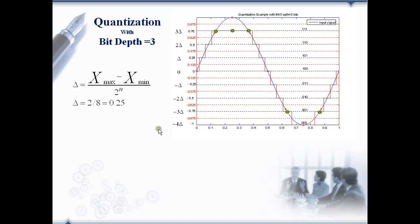We can also represent the quantization levels in terms of step size. Here we can see -4 del equals -1. Del is 0.25, so -4 del equals -1. Similarly, -3 del equals -0.75, and so forth.